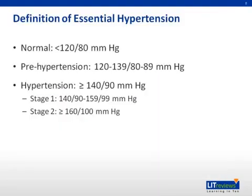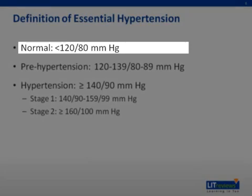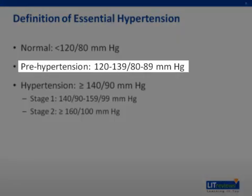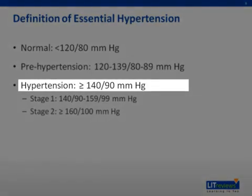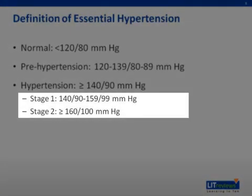The definition of essential hypertension: normal blood pressure is less than 120 over 80 mmHg. We define prehypertension as a systolic blood pressure between 120 and 139 over a diastolic of 80 to 89 mmHg — an important definition since patients with prehypertension have increased cardiovascular risk. Hypertension is defined as a systolic greater than 140 or a diastolic greater than 90 mmHg, broken into stage one (140/90 to 159/99) and stage two (systolic >160 or diastolic >100 mmHg).